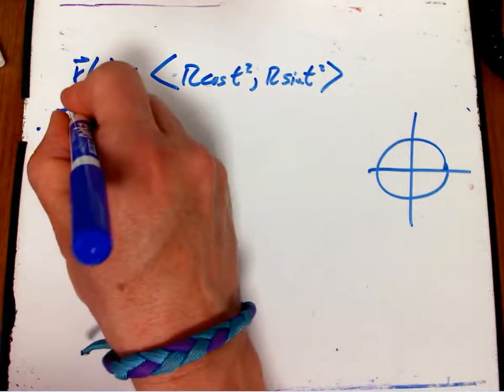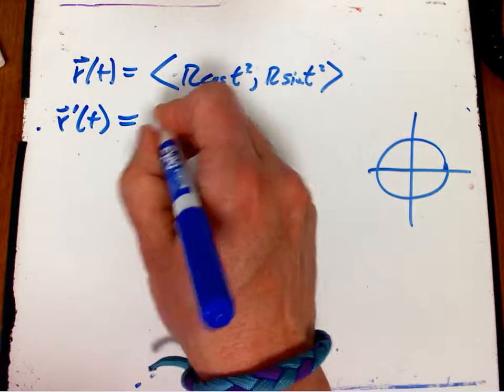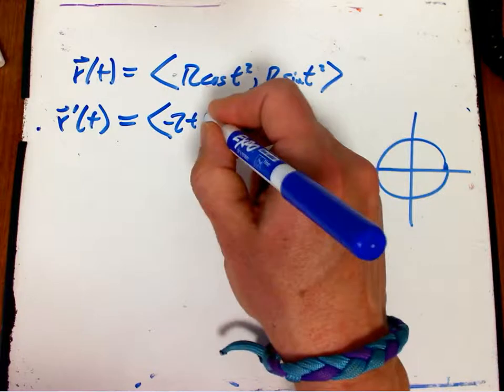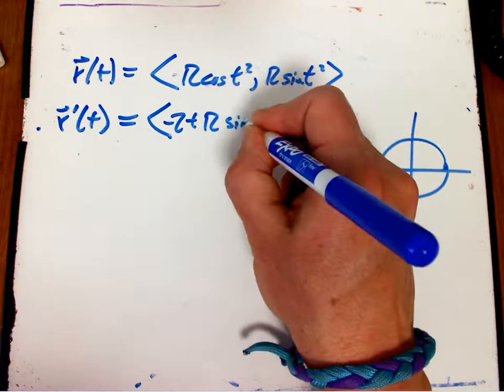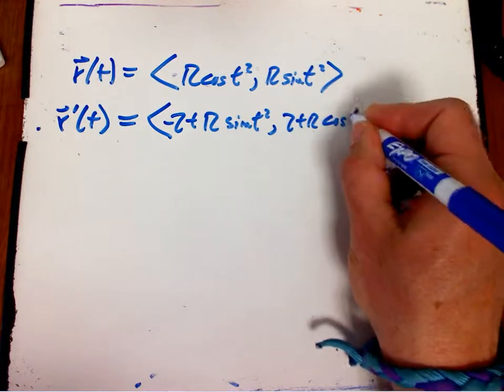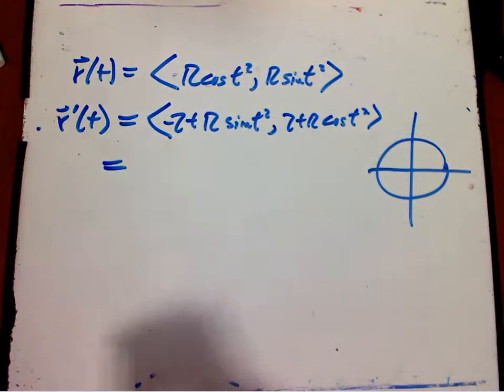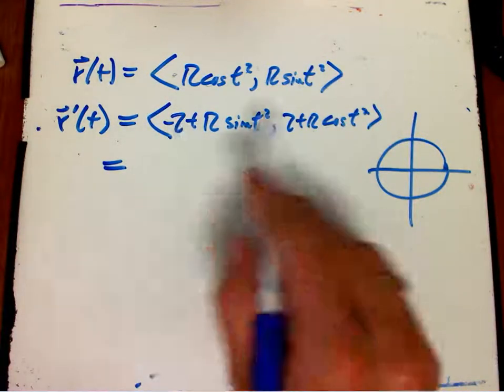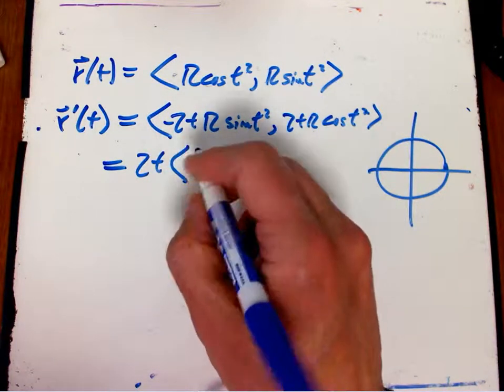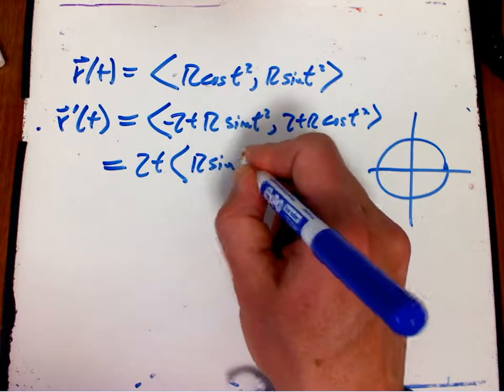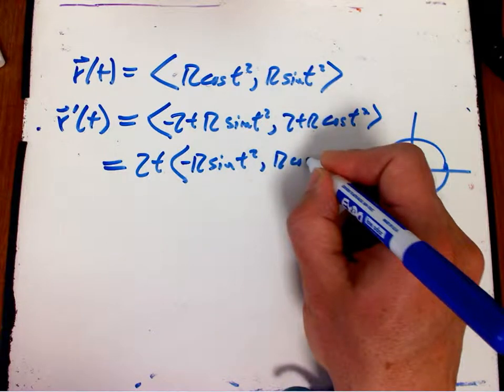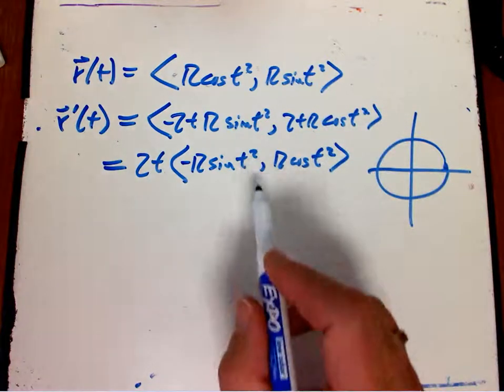Then let me take the velocity again. And we're going to get a chain rule factor. We're going to get 2t, minus 2t r sine t squared, and 2tr cosine t squared. Now, one thing we can always do with vectors is, if we have a common factor in both, that's really just a scale factor. So this is the scale factor 2t times minus r sine and r cosine. Now it happens to be of t squared, because that's the angle that I'm at on the circle.